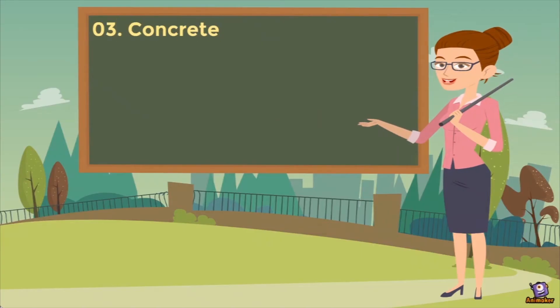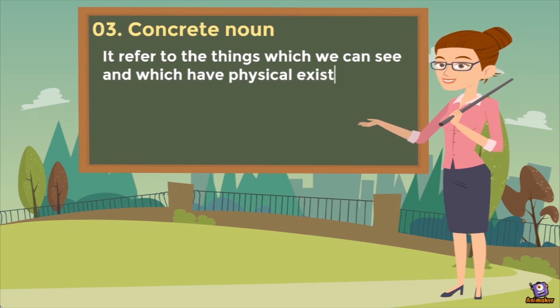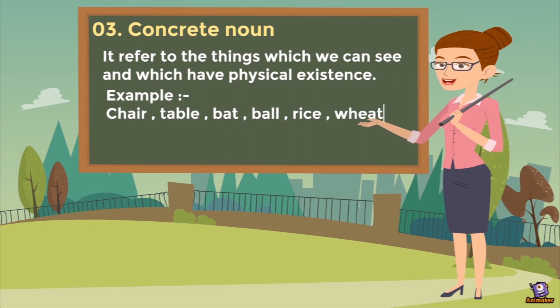Up next we have concrete noun. Concrete noun refers to things which we can see and which have physical existence. Concrete noun woh noun hoti hai jinki environment mein physical existence hai — matlab hum unhe dekh sakte hain aur choo sakte hain. Examples: chair, table, bat, ball, rice, wheat, etc. So they are known as concrete nouns.